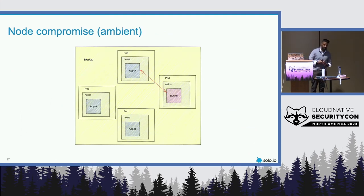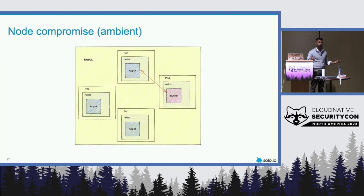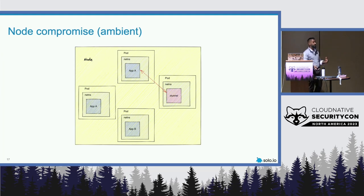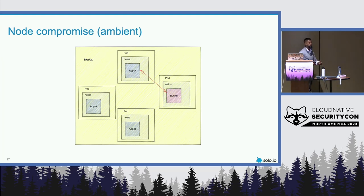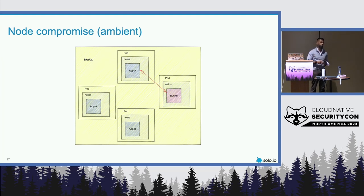There's the final piece: node compromise. I get this question a lot — traffic between an app and the Z-tunnel pod is not encrypted. But why does someone have access to your node? Why do they have root access? This is more of a physical control and role-based access control situation. Do you have proper policies in place to prevent people from getting into your node? Are you using secure operating systems or secure distributions? There are other considerations beyond the fact that App A and the Z-tunnel don't have encrypted communications — if someone gets access to your nodes, you're in a lot more trouble than just that.